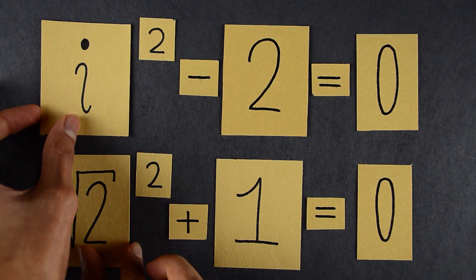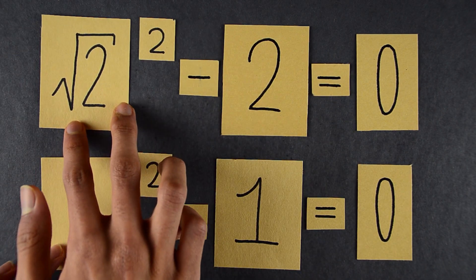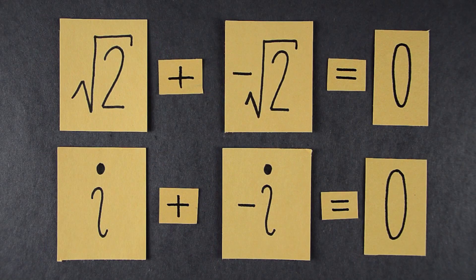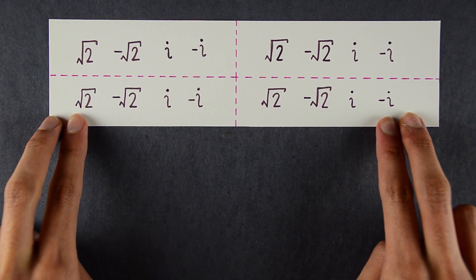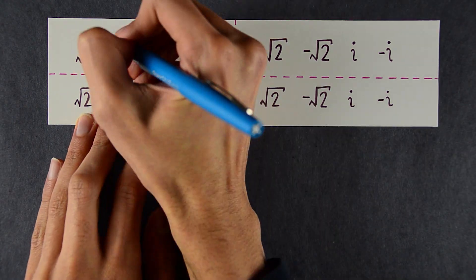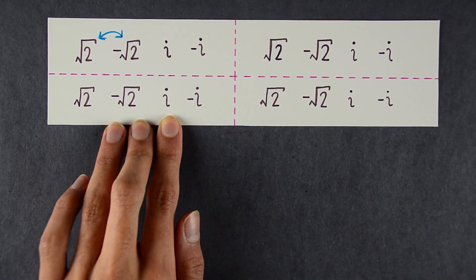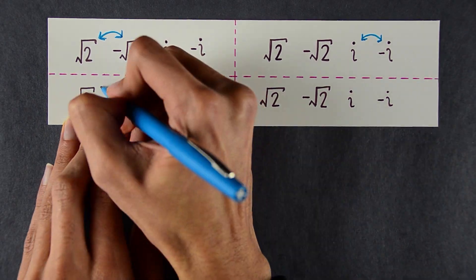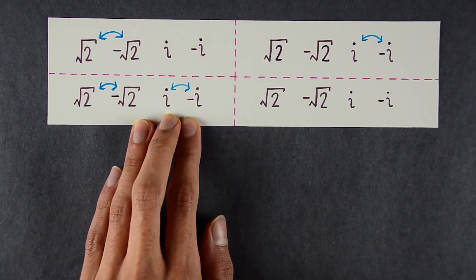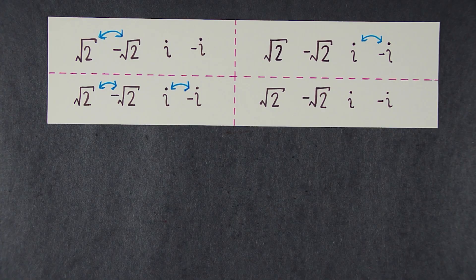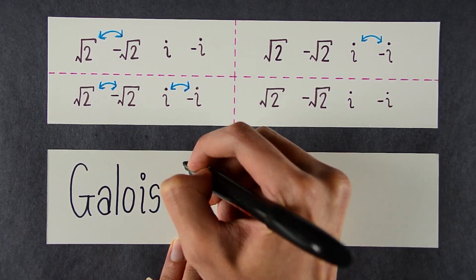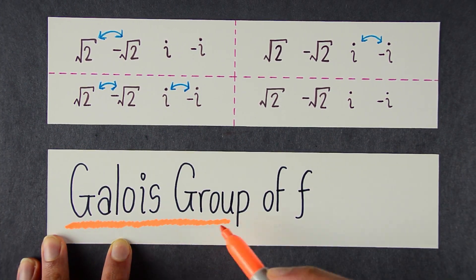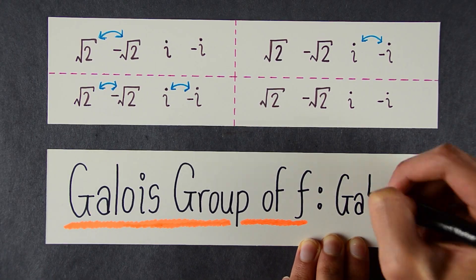It turns out that every single polynomial relation involving these numbers that has rational coefficients, like these ones here, still hold when you swap the roots in these ways. Namely, you can swap root 2 and negative root 2, i and negative i, root 2 and negative root 2, and i with negative i. Or you can do nothing at all. The set of all these permutations is called the Galois group of f, denoted gal f.